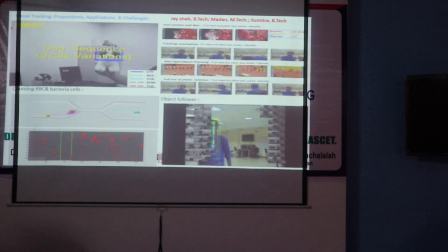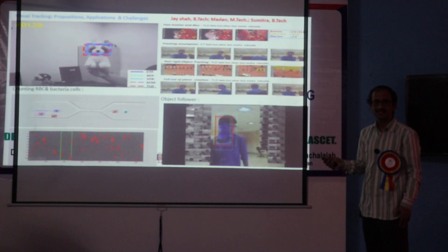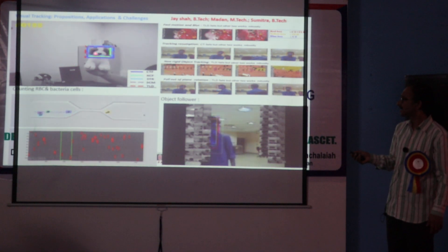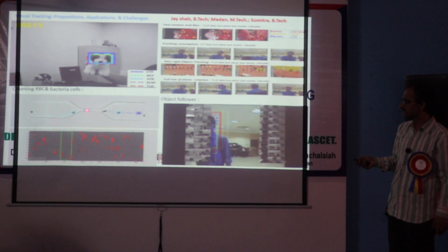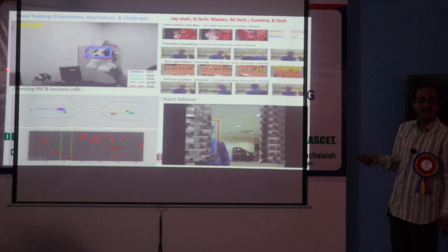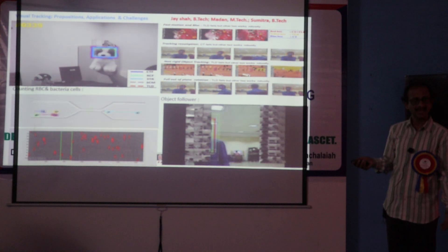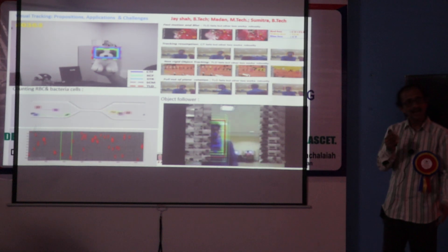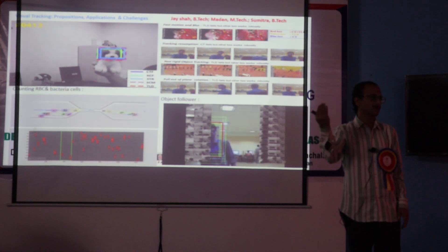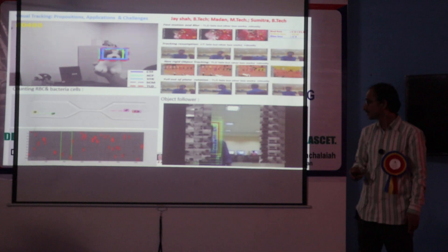These are all referred to as visual tracking, where we want to track the objects of interest. We characterize the object of interest by some features, and those features we want to observe from image to image, or frame to frame. That is referred to as tracking.